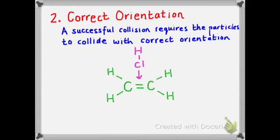Let's imagine that an HCl molecule approaches the ethene molecule in this orientation. HCl is a polar molecule because of the difference in electronegativities between the chlorine and the hydrogen atom, so the chlorine end is slightly negative and the hydrogen end is slightly positive. On the ethene molecule, the double bond between the carbon atoms means we have two shared pairs of electrons — a region of high electron density, which is negative. There will be repulsion between the negative double bond center and the slightly negative chlorine atom on the HCl, so we won't have a successful collision. That's an example of an incorrect orientation.